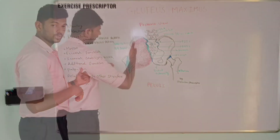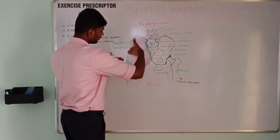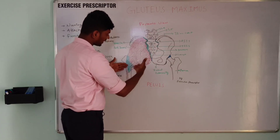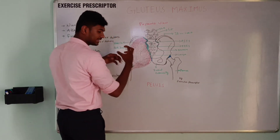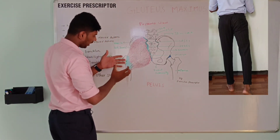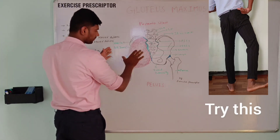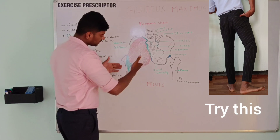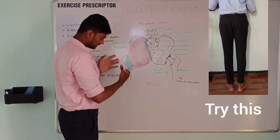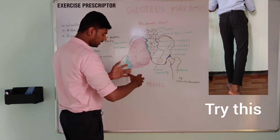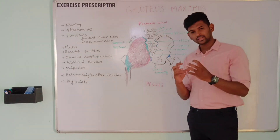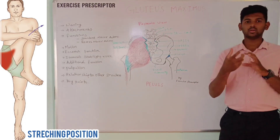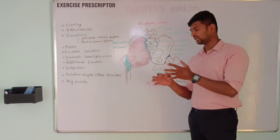Next, movement: the upper muscle fibers have one line of pull in an oblique plane, and the lower muscle fibers have one line of pull in an oblique plane. If the upper muscle fibers contract, it creates a motion of extension, abduction, and lateral rotation of the hip. The lower muscle fibers create the motion of extension, adduction, and lateral rotation of the hip. The eccentric function of gluteus maximus is to restrain or slow the flexion, medial rotation, abduction, and adduction movement of the hip joint.